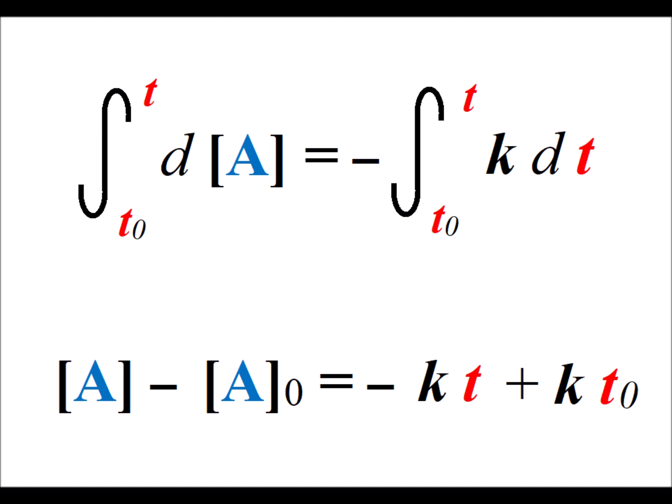Each of these integrals is straightforward. So we get the concentration of A on the left hand side between the limits. And on the right hand side we have minus kt, again between the limits of t₀ and the current time t.